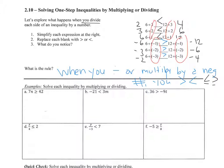Only if you divide or multiply by a negative. So the first one, problem a: I'm still dividing by a positive 7, so I don't flip the inequality sign. It's still going to be n greater than or equal to 6. Second one, b: I'm dividing by a positive 3, so I still don't change it. It still is negative 7 is less than m.